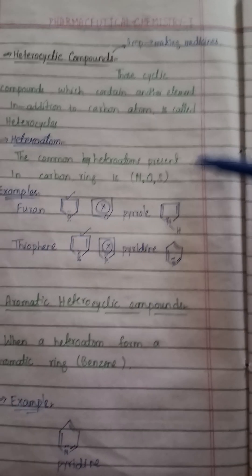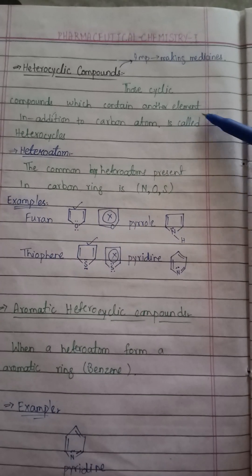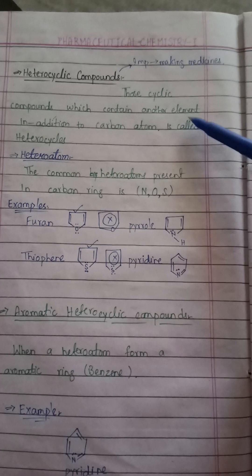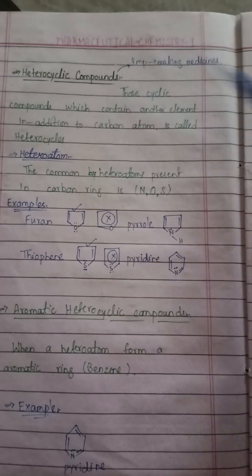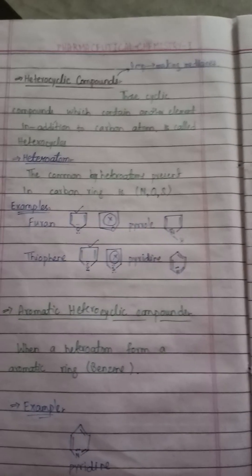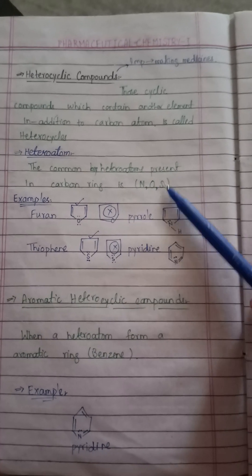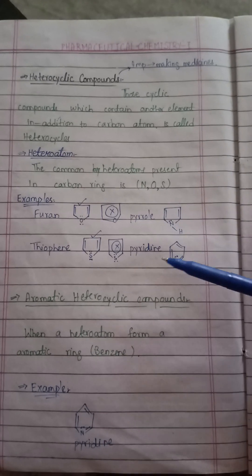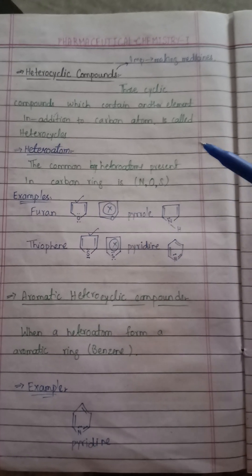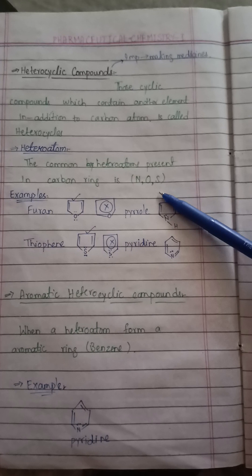The definition of a heterocyclic compound is: a cyclic compound which contains another element in addition to carbon atoms in the ring, which is called a heterocycle. The atom other than carbon present in the heterocyclic compound is called a heteroatom. The common heteroatoms present in the carbon ring are nitrogen, oxygen, and sulfur.